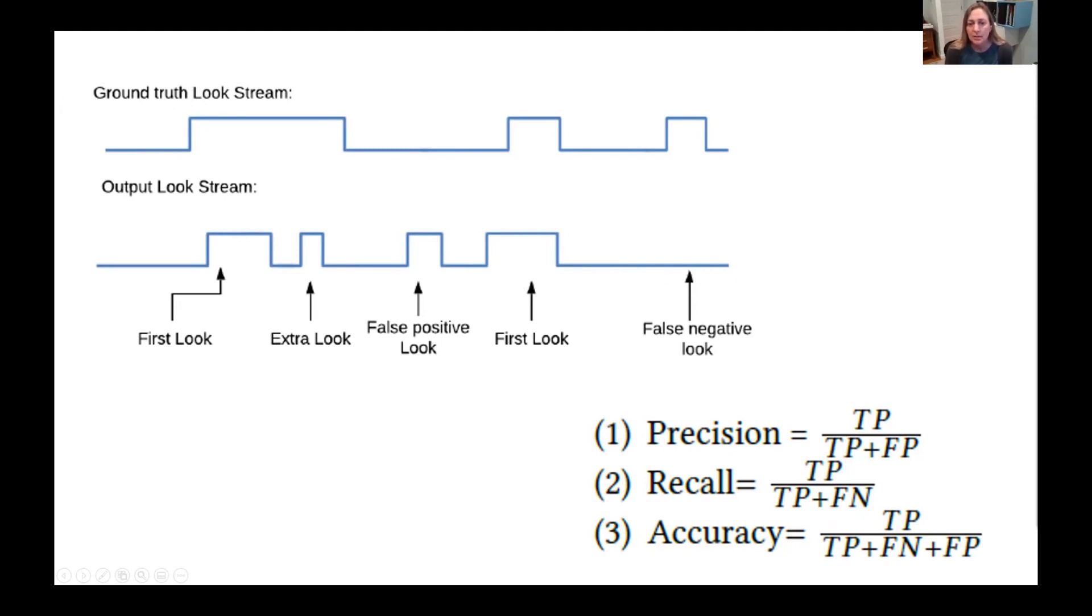In this framework, precision is the true positive look frames divided by the sum of true positive and false positive look frames. Recall is true positive look frames divided by true positive and false negative look frames. And accuracy is the sum of true positive look frames divided by the sum total of true positive, false negative, and false positive look frames.